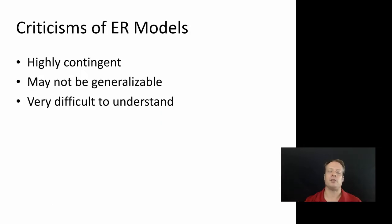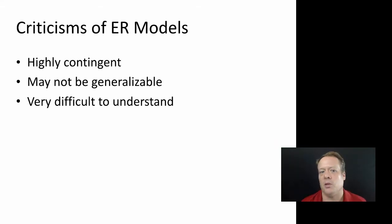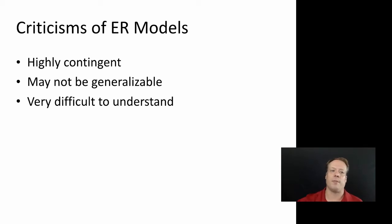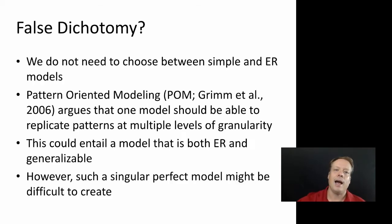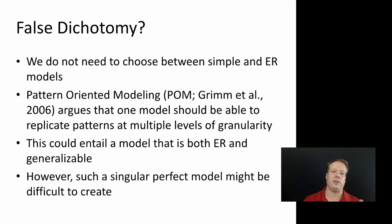But the problem with elaborate realistic (ER) models is that they're highly contingent — they're usually built for a particular setting or a particular time. As a result, they may not be very generalizable to other settings and times. It can also be difficult to understand: if you throw in all those different mechanisms, how do you know what mechanisms are really driving your model outcomes? So in some ways it's made out to be a trade-off between simple and elaborate realistic models — but I think that's a false dichotomy. There's no reason why you have to build either. Instead, you can think about something like pattern-oriented modeling.